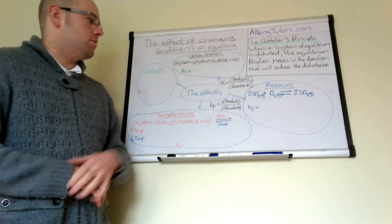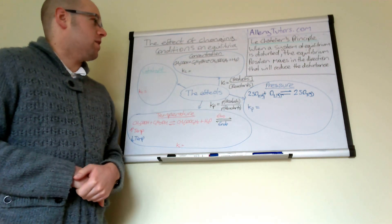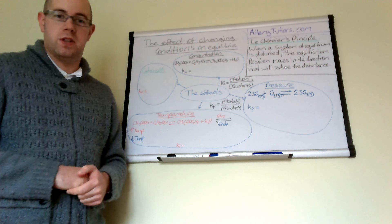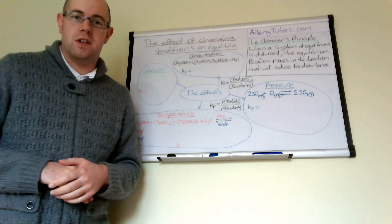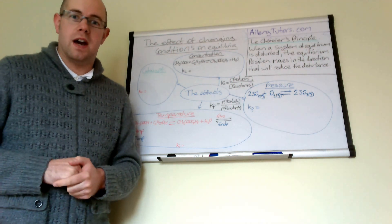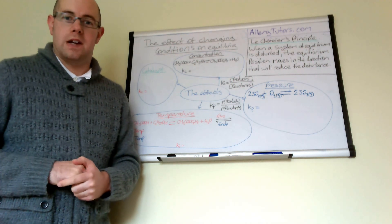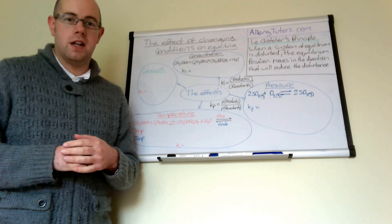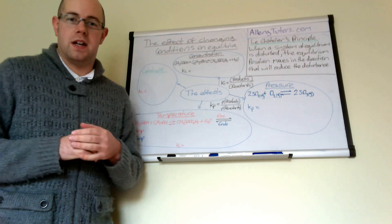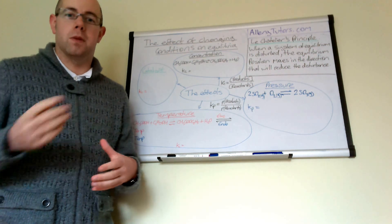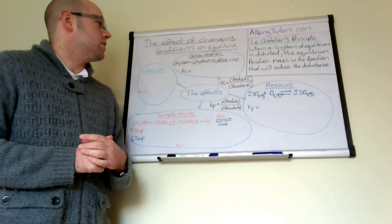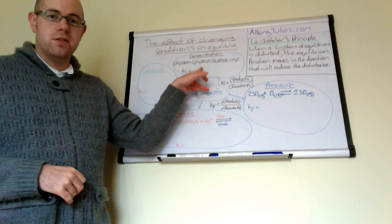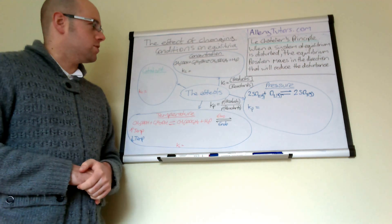I've got a spider diagram here with four different bubbles, representing the four potential effects you can have on a reaction. I'm going to go through each one and explain what effect it has on Kc or Kp. We're going to start with concentration.